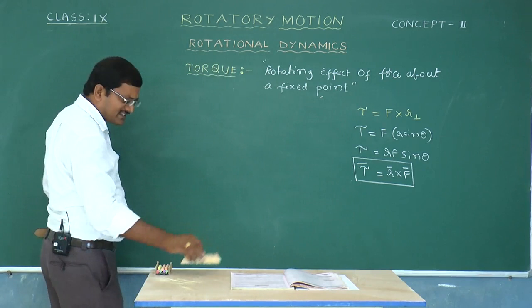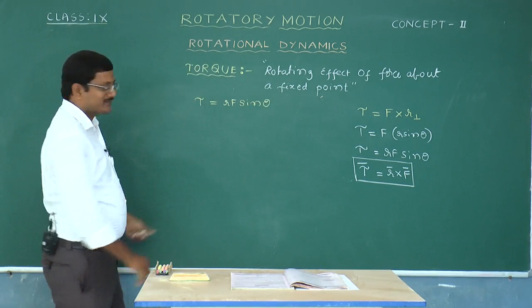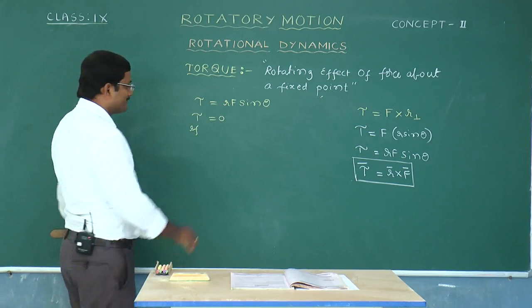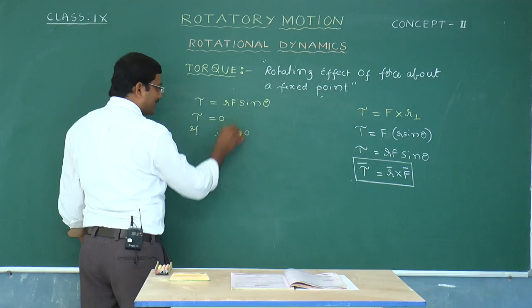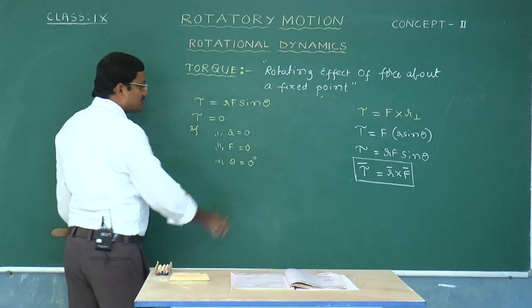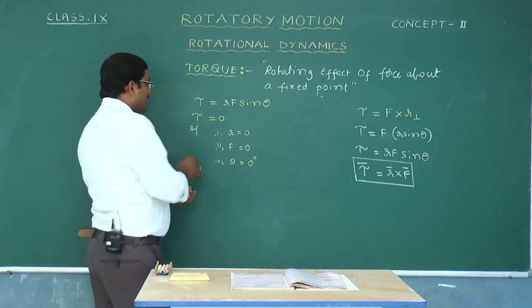Torque τ = rF sin θ. This torque becomes zero in certain cases. First case: when r = 0. Second case: when F = 0 — when you do not apply force, the body does not rotate. Third case: when θ = 0° — sin 0° = 0, so τ = 0. Any of these three conditions makes the torque zero. Let us discuss these three cases with examples.